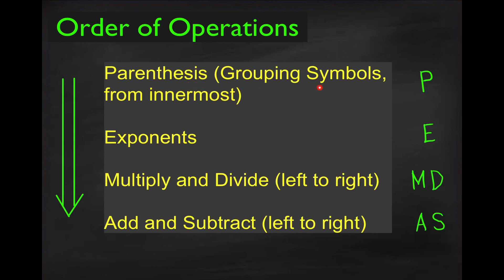If there is more than one grouping symbol, we have to start from the innermost grouping symbol. First we do the exponents followed by multiplication and division, from left to right, and then followed by addition and subtraction also from left to right. The commonly used grouping symbols are parentheses, square brackets, and curly braces.